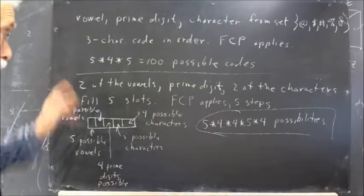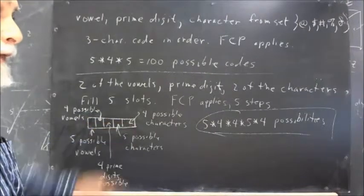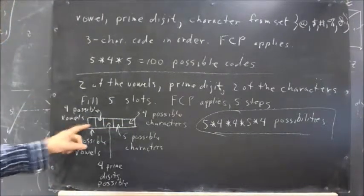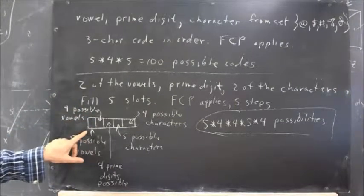We think of filling five slots, five steps. Fill the first slot, second, third, fourth, and fifth. How many possibilities are there for the first choice? That's going to be a vowel. There are five possible vowels when we make our first choice.